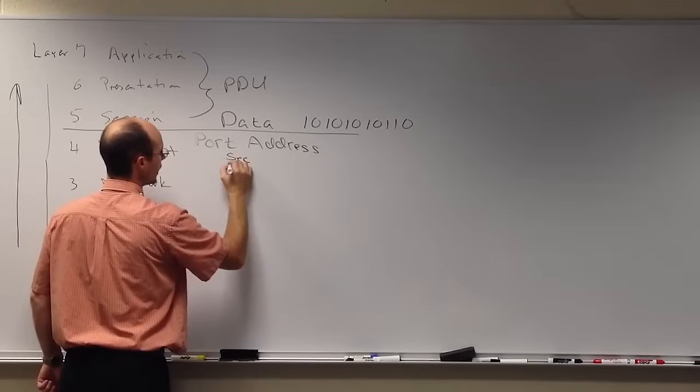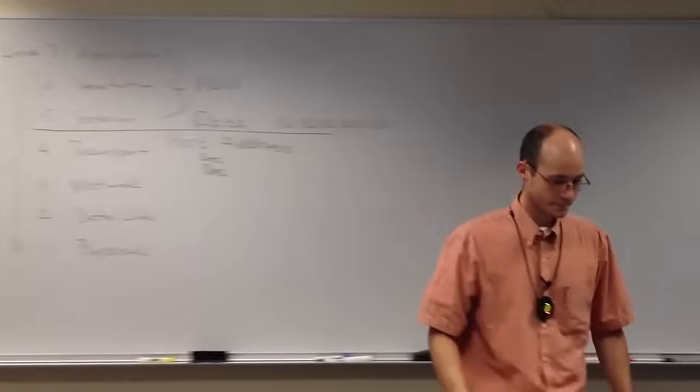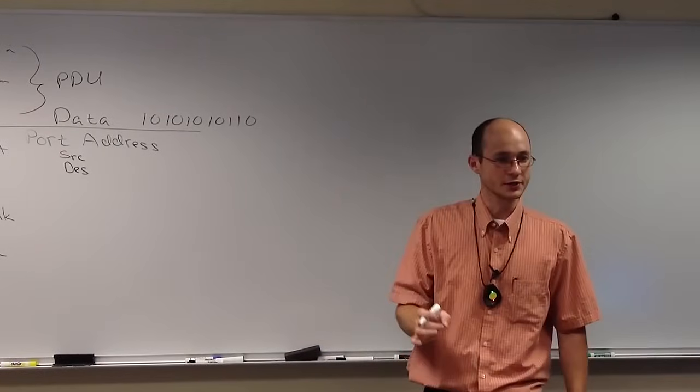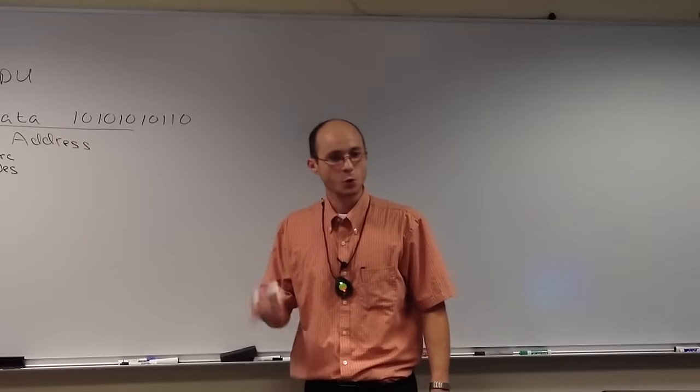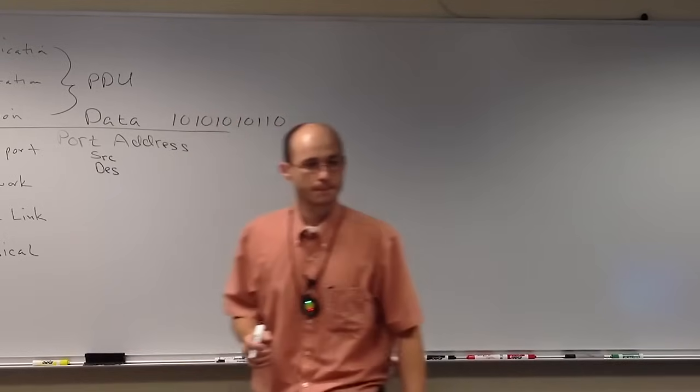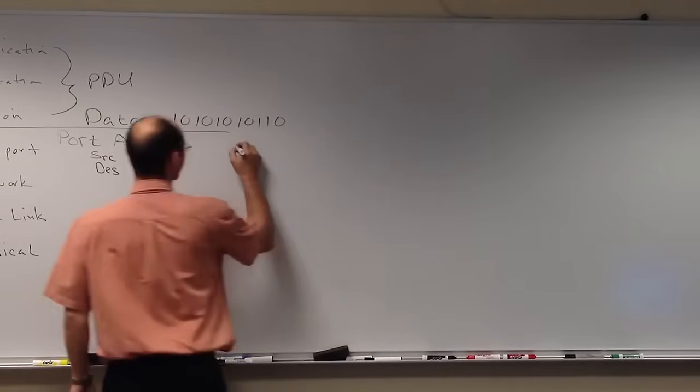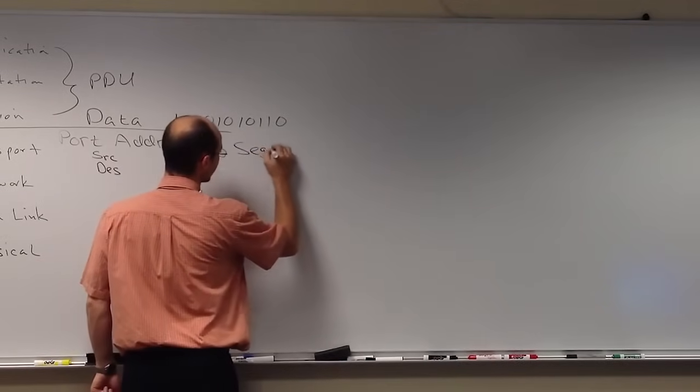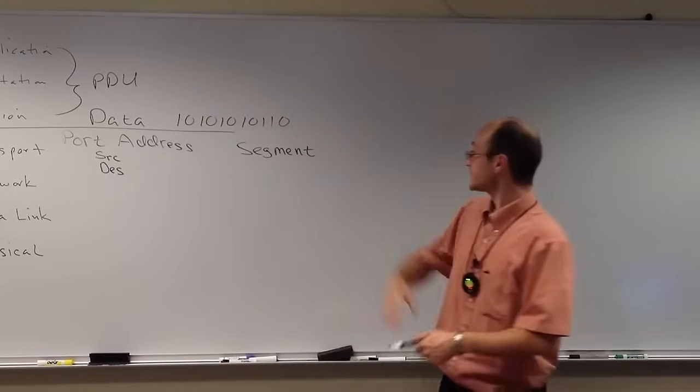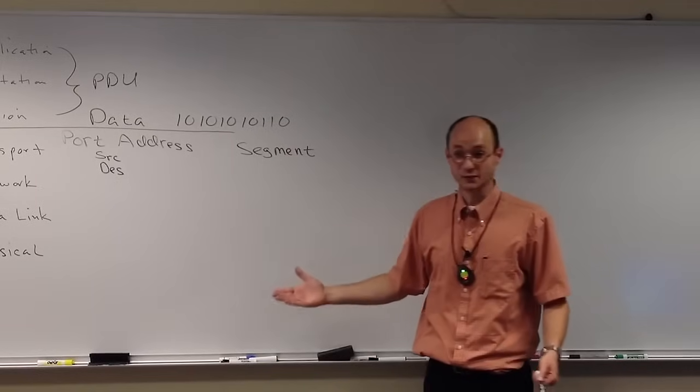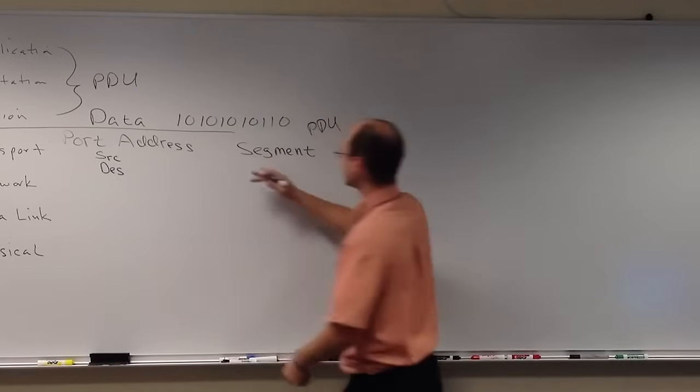There's going to be a source and there's going to be a destination. We stamp each and every one of the PDU for the transport layer with the source and destination. What is the PDU called for the transport layer? Segment. And why is it called a segment? Because it takes the data and it breaks it up into pieces, hence we call those pieces segments, right? So, the PDU for the transport layer is called a segment.